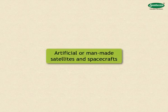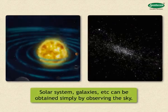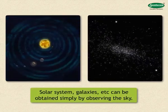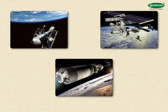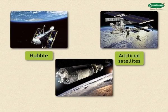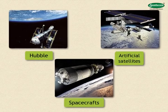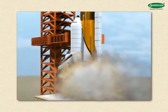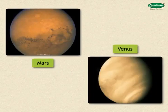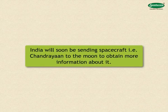We come to the last part of this chapter: artificial or man-made satellites and spacecrafts. Some information about the solar system, galaxies, etc. can be obtained simply by observing the sky. To obtain detailed information, we use telescopes like the Hubble, artificial satellites and spacecrafts. Through them, a lot of new information is becoming available in the field of astronomy. Separate spacecrafts have been sent to study planets like Mars and Venus. India will soon be sending a spacecraft, Chandrayaan, to the moon to obtain more information about it.